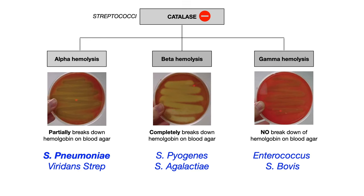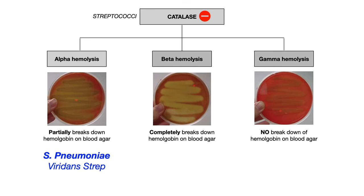Within each of these three hemolytic categories, there are other ways to further subdivide. We can go further down this branch to figure out: are we dealing with Strep pneumoniae or viridans strep? Since this video is on Strep pneumoniae, we'll focus on the alpha hemolytic category. When differentiating Strep pneumoniae versus viridans strep, you could use virulence factors or buzzwords the test writer gives you, or figure it out based on the clinical picture — such as pneumonia or meningitis.